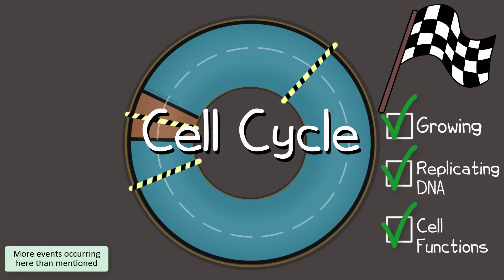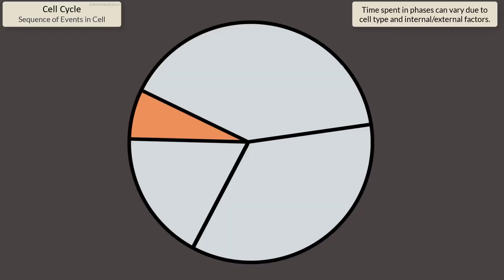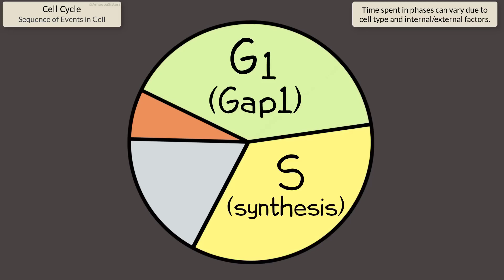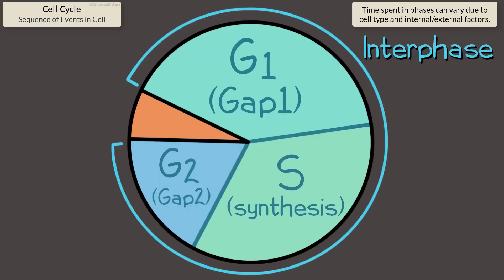To better understand those checkpoints, let's further divide this cell cycle pie chart. We have G1, S, G2. All three of those are part of interphase. Then we have M phase where mitosis will happen.